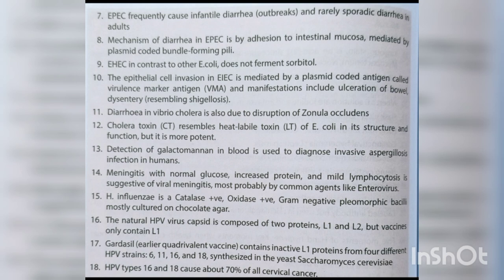Gardasil, the earlier quadrivalent vaccine, contains inactive L1 proteins from four different HPV strains — 6, 11, 16 and 18 — synthesized in the yeast Saccharomyces cerevisiae. HPV types 16 and 18 cause about 70% of all cervical cancers.